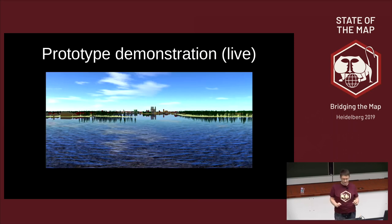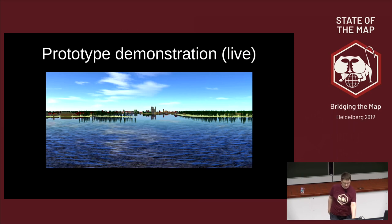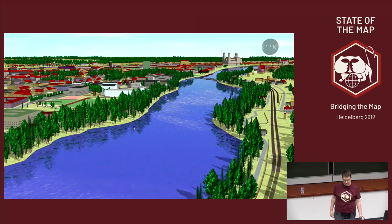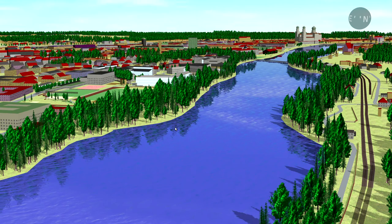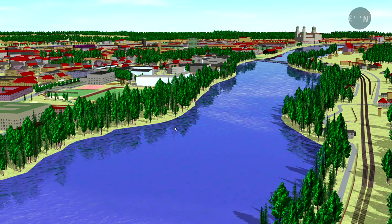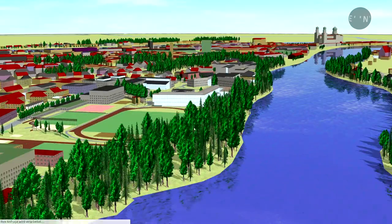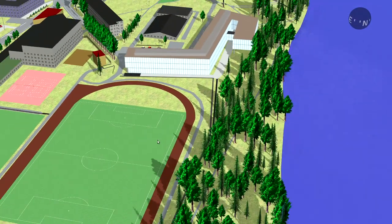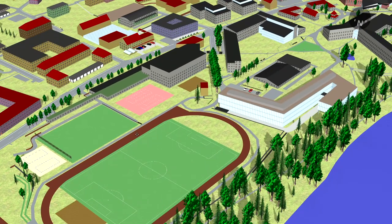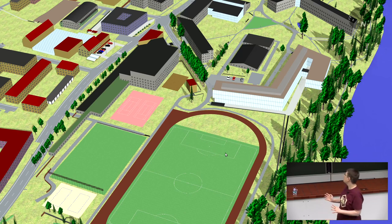Originally my intention had been to show a working version that's already published and launched, but this didn't get quite done in time for State of the Map, so I only have a prototype to show. This is a 3D rendering of Passau, which is where I'm living. As you can see, this is rendered real-time in the browser, so you can move the camera freely around wherever you want it to be.